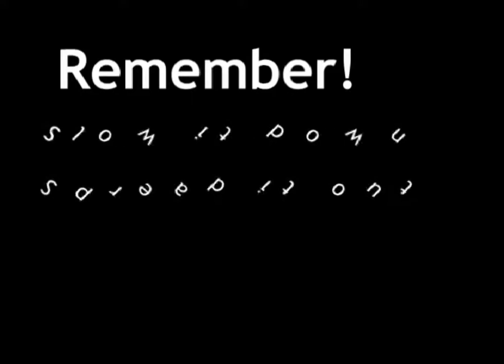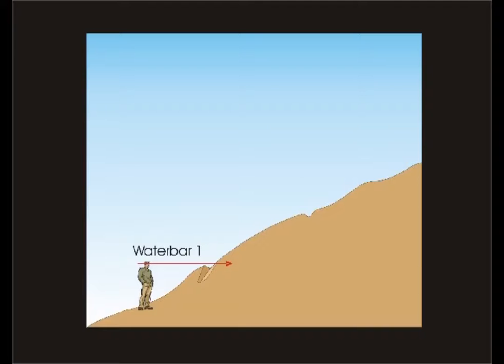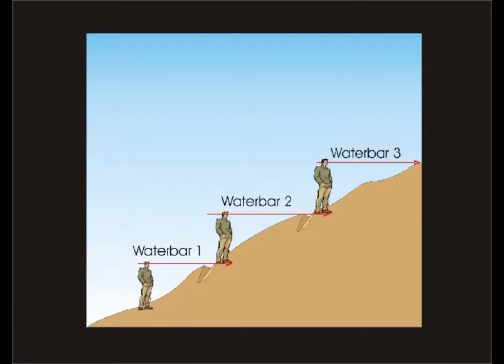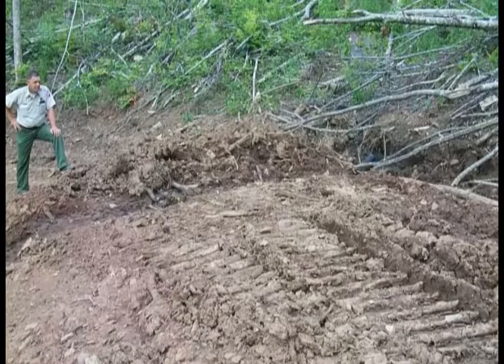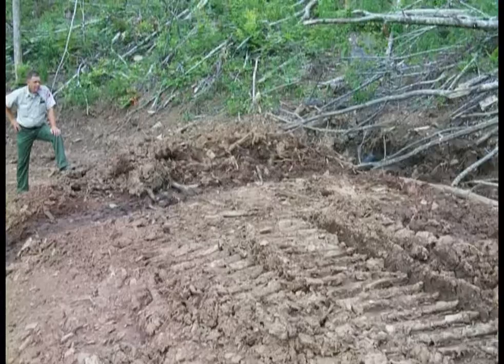Two basic steps for controlling runoff: slow it down and spread it out. A quick and easy method to space water bars can be accomplished by using an eye-level method. First, stand at the bottom of the slope and look straight ahead into the grade. Where your sight line meets the slope grade is where your first water bar should be constructed. Next, while standing at the sighted location for water bar number one, repeat the process by sighting straight ahead into the grade to position the second water bar. Continue these steps until you reach the top of the slope. However, when doing the actual construction of each water bar, you should begin at the top of the slope and work your way back down. Once the water bar is constructed, you may need to use additional BMPs to capture the sediment released from the water bar. Some good examples include sediment pits, hay bales, or filter areas.